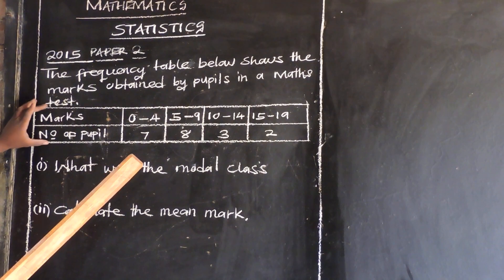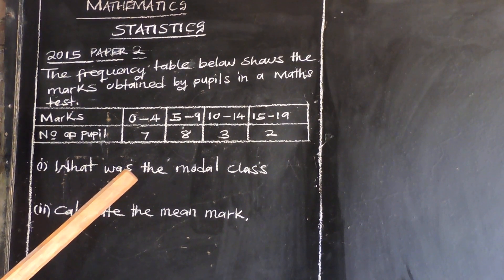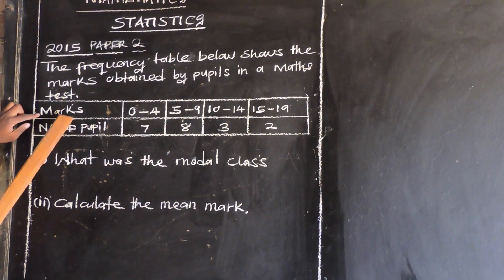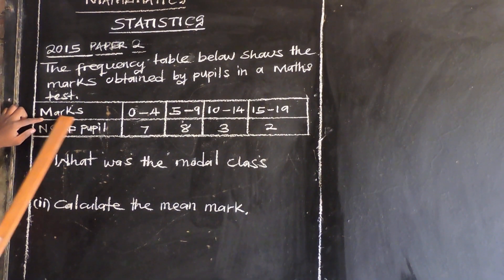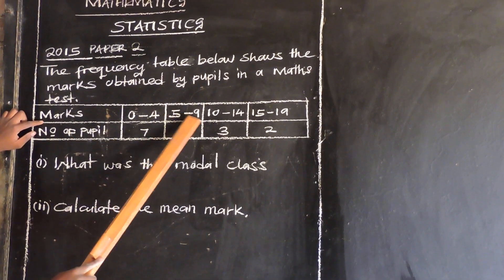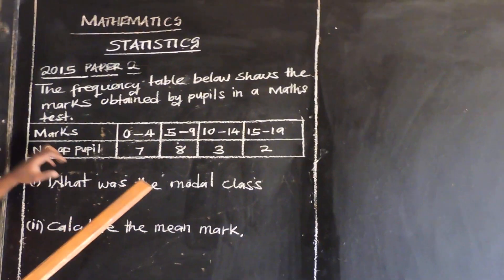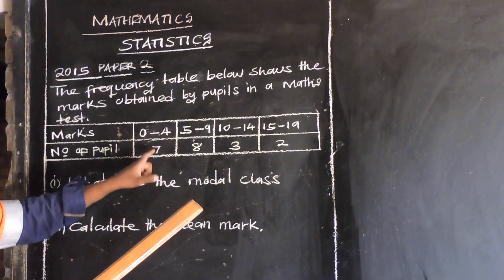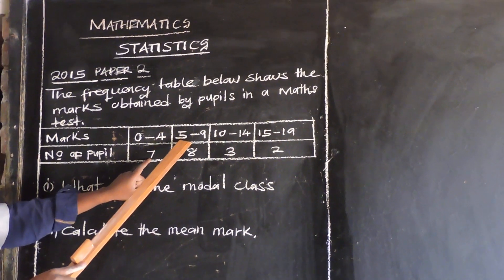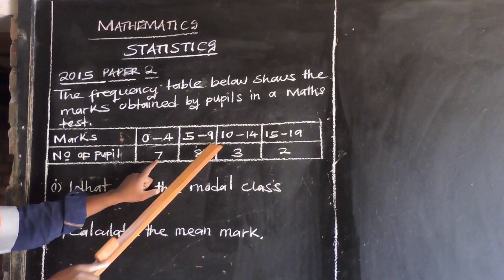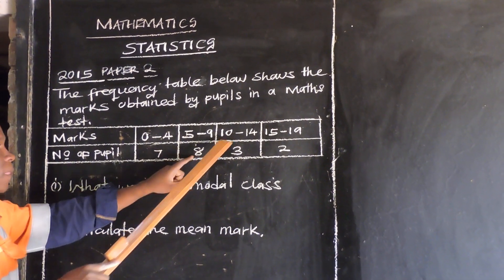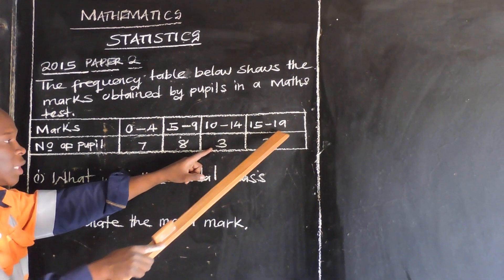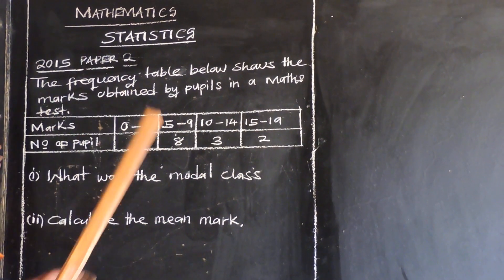So I have got this table. This table has got two rows. The first row shows the marks in a range. Those who scored 0 to 4 were 7. Then 5 to 9 were 8. Then 10 to 14 were 3. And then 15 to 19 were only 2.